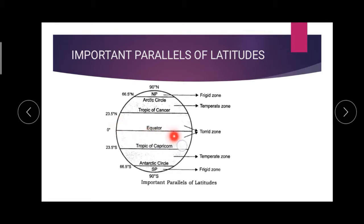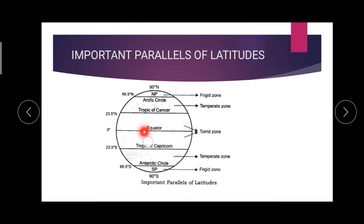Look at this picture — we can understand very clearly. What is the center line? The center line is the equator — it divides the globe into two equal halves. Equator is zero degree.